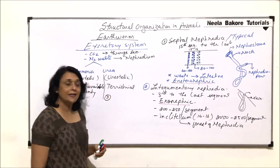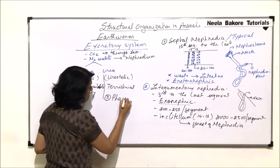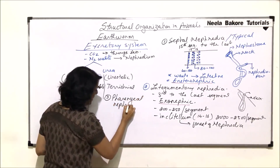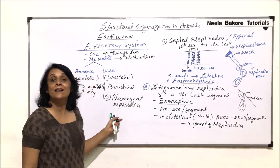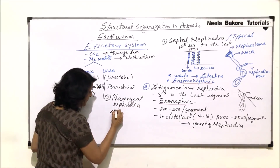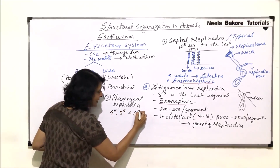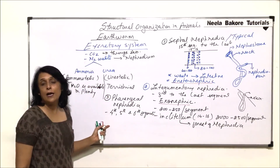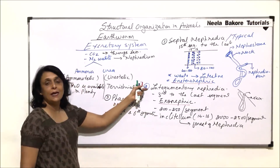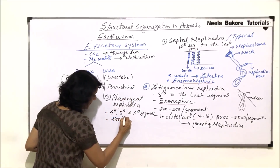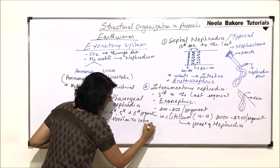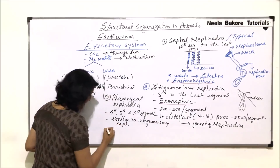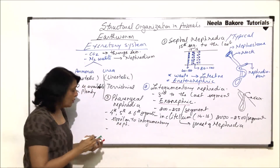The third type of nephridia are called pharyngeal nephridia. These nephridia are present in clusters in the 4th, 5th, and 6th segments. They also do not have a nephrostome, making them similar to integumentary nephridia, and they are enteronephric.